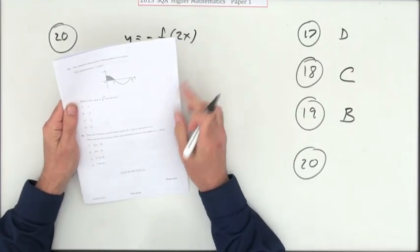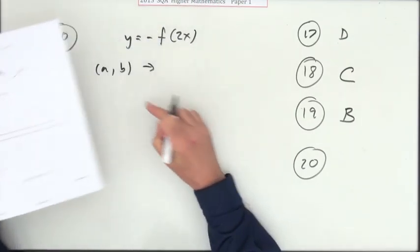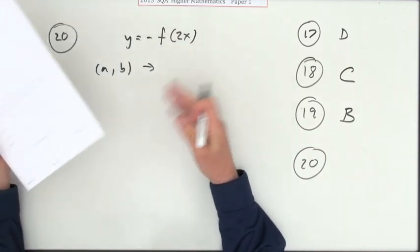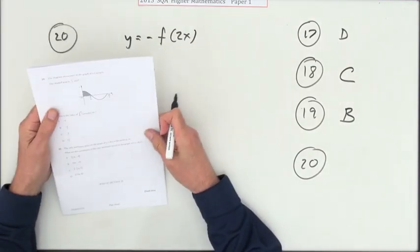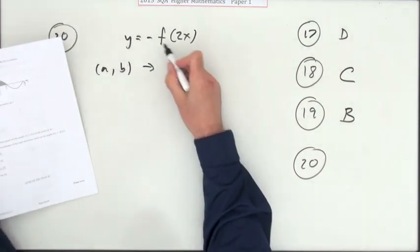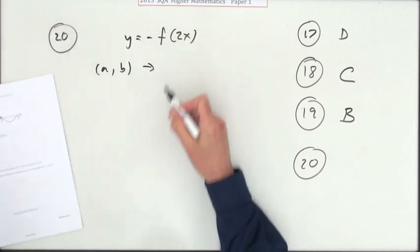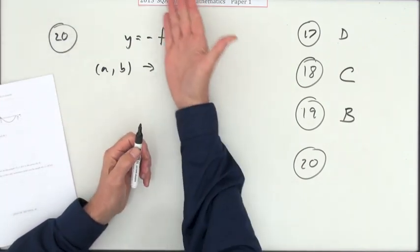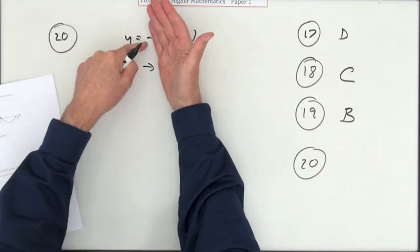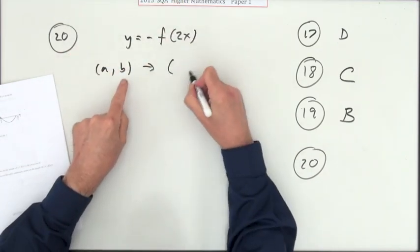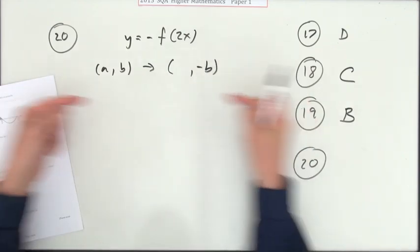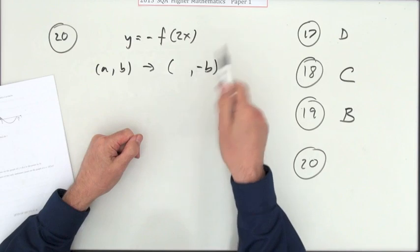Number 20. The only stationary point on the graph of this is the point (a, b). What are the coordinates of the only stationary point on the graph of y equals negative f of 2x? Well, there's two things happening outside of f that affects the y coordinate. So this says the new y coordinate will be the negative of the old one, so it's going to go to negative b. Inside the bracket affects the x coordinates, and you probably just remember it as do the opposite of what it says. So it's not going to expand it by two, it's going to contract it by two.